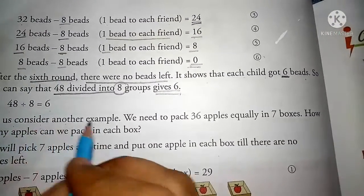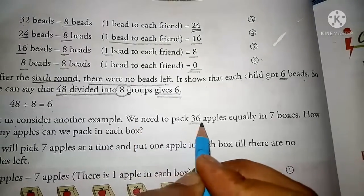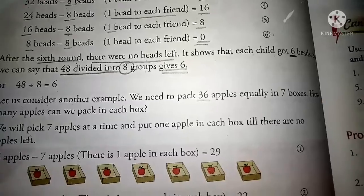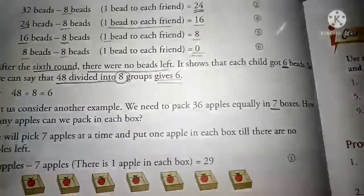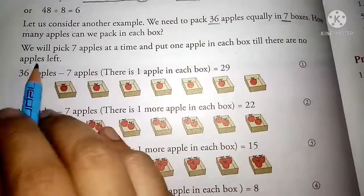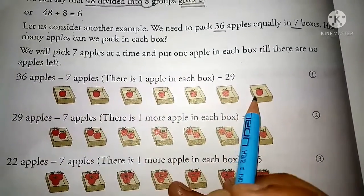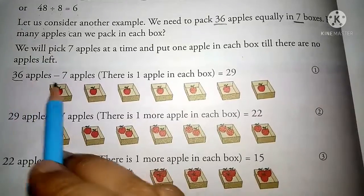Let us consider another example. We need to pack 36 apples in 7 boxes. How do we do? We will pick 7 apples at a time and put 1 apple in each box. Here we have 7 boxes and there are 36 apples.